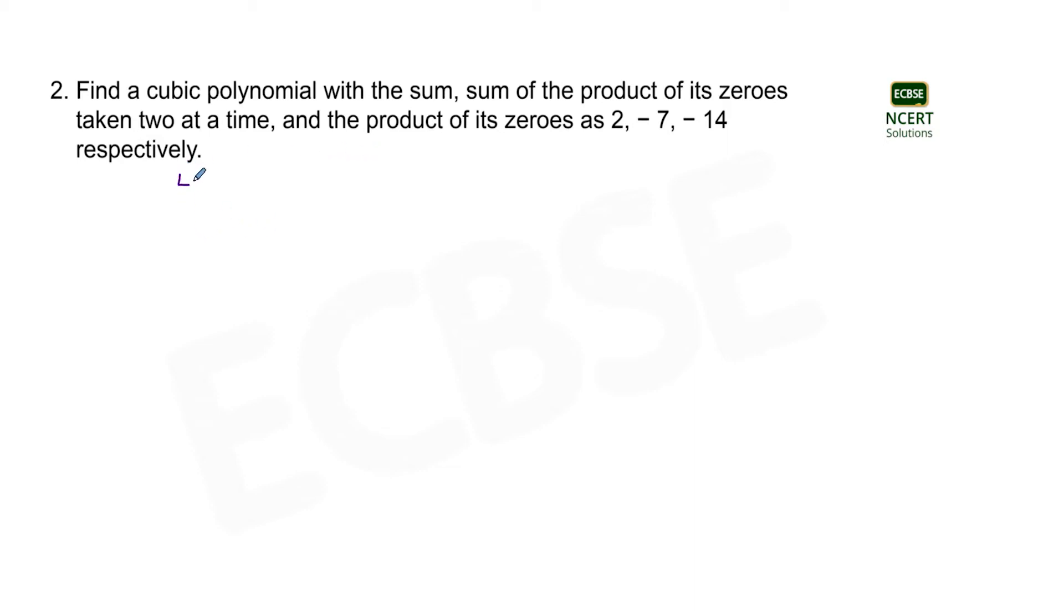So to solve this question let alpha, beta and gamma are the zeros. So in this question we have supposed that alpha, beta and gamma denote zeros of the cubic polynomial.